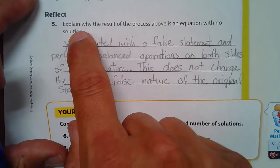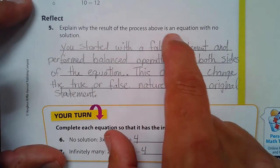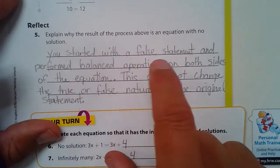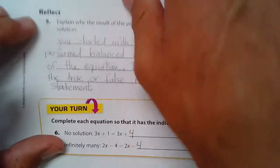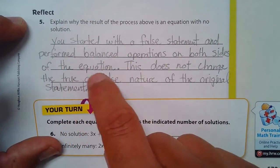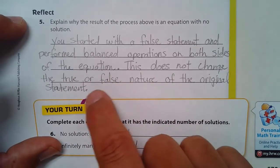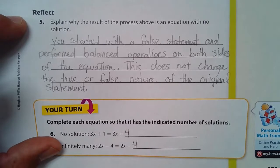Explain why the result of the process above is an equation with no solution. Okay, you started with a false statement. We started with that. Right there. And performed balanced operations on both sides of the equation. This does not change the true or false nature of the original statement. So, everything you add on to that, as long as you did it to both sides, adds on to the nature of that statement.